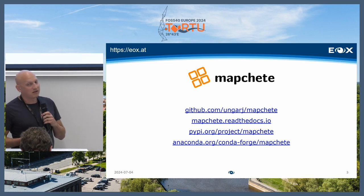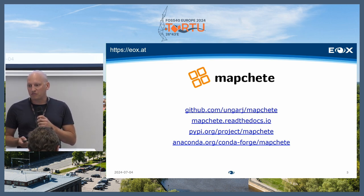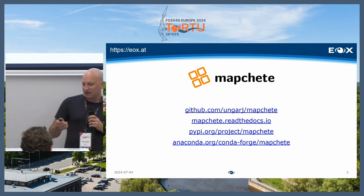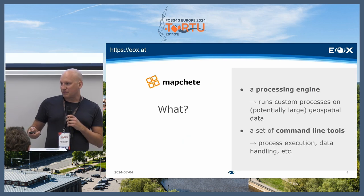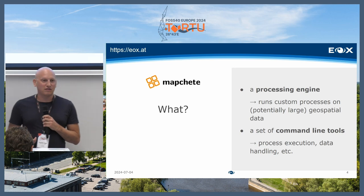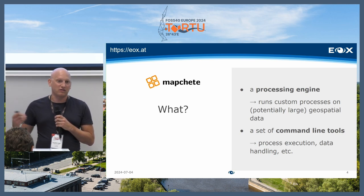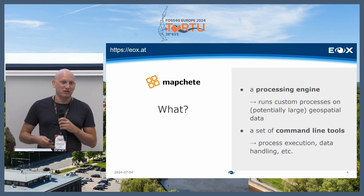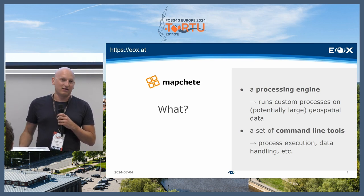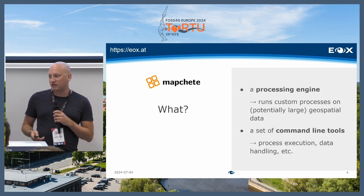So, what is Mapchete? Mapchete is a tool, open source, written in Python — you can find it on GitHub. It's mainly a processing engine, first and foremost. It runs custom processes on potentially very large geospatial data. It's also a set of command line tools that help you to achieve this.